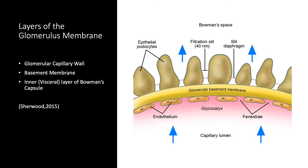These layers include the glomerular capillary wall, the basement membrane, and the inner layer of Bowman's capsule. Collectively, these layers function as a fine molecular filter that retains blood cells and plasma proteins, but permits water and solutes of smaller molecular dimensions to filter through. Now let's consider each layer in more detail.